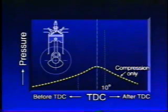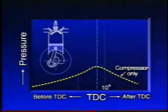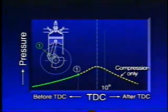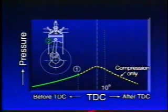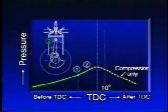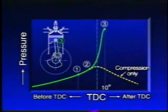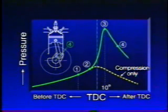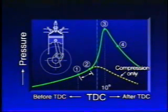This graph shows the process in terms of the pressure changes inside the cylinder. Even if ignition takes place at point one, combustion doesn't start immediately. Instead, combustion starts at point two and pressure starts to increase. The pressure reaches its maximum at point three, and combustion comes to an end at point four. The period between one and two is called the ignition delay time.